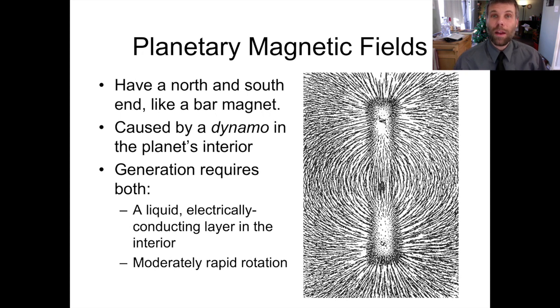Planets oftentimes have magnetic fields that are very similar to this. We call these dipole fields because there are two poles, a north and a south.